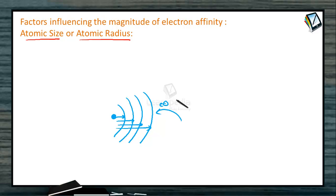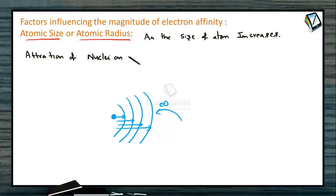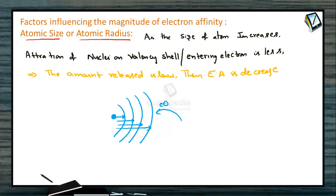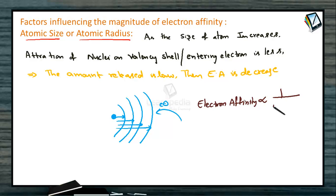As the atomic size of the atom increases, the electron gain enthalpy or electron affinity decreases. As the size of the atom increases, the attraction of the nucleus on the valence shell or entering electron is less, so the amount of energy released in this process will be low. Therefore, electron affinity is inversely proportional to the atomic size or atomic radius.